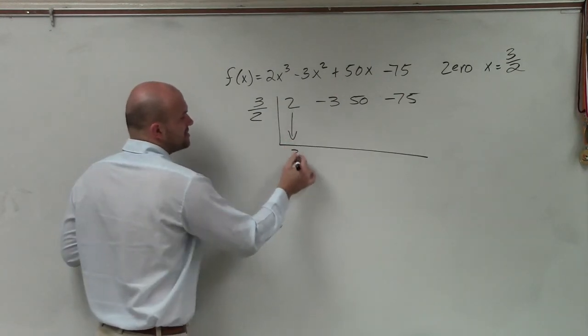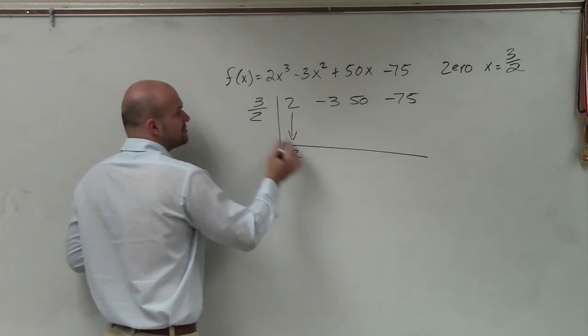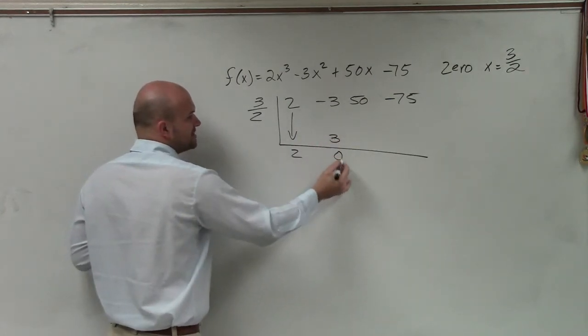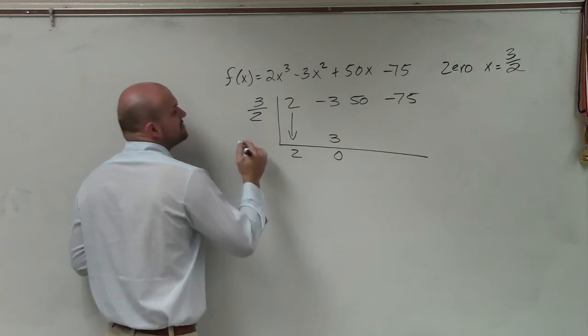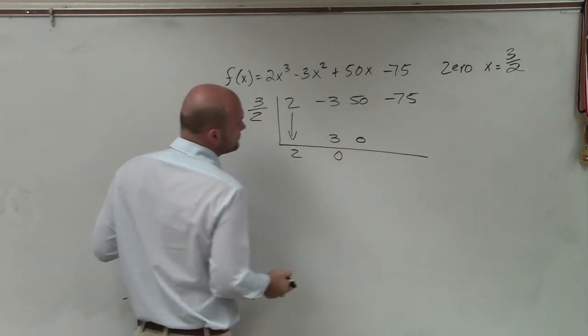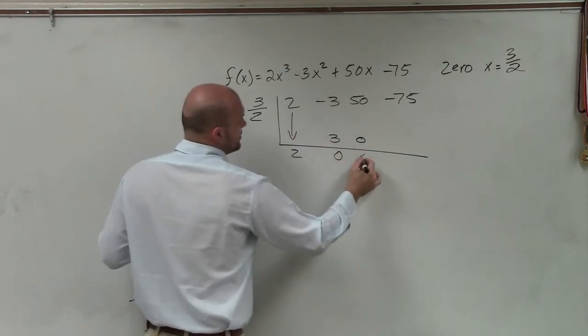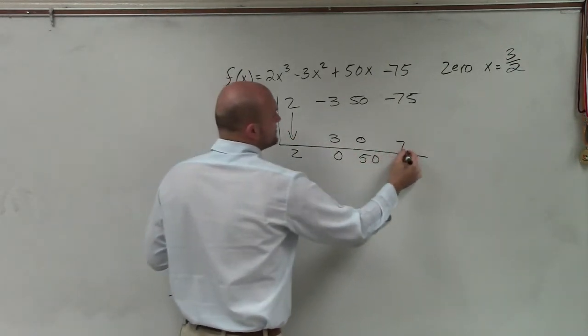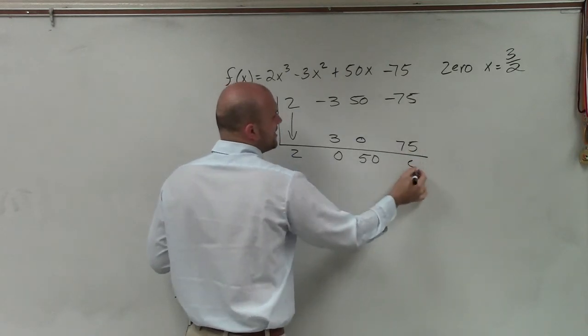2 times 3 halves is just going to be 3. Negative 3 plus 3 is going to be 0. 0 times 3 halves is 0. 50 plus 0 is just going to be 50. 50 times 3 halves is going to be a positive 75. Negative 75 plus 75 is 0.